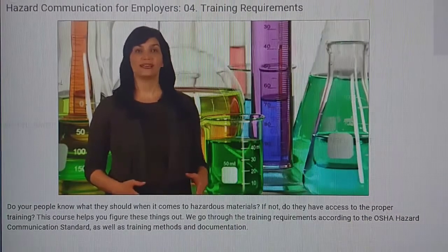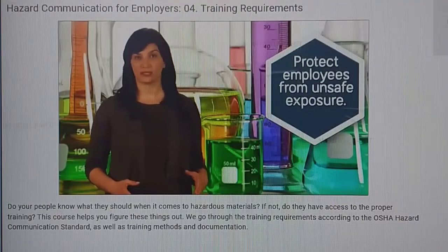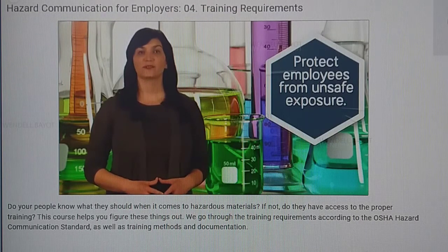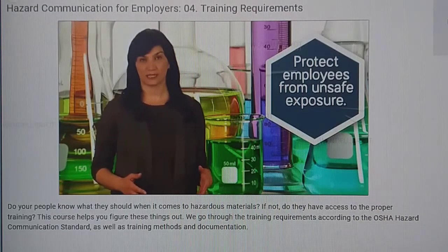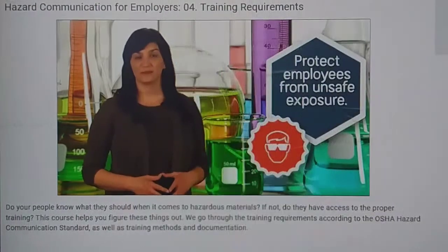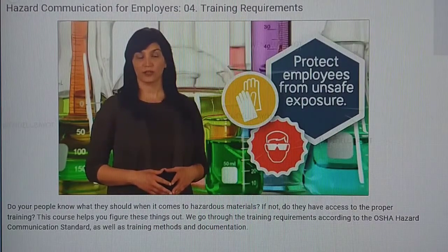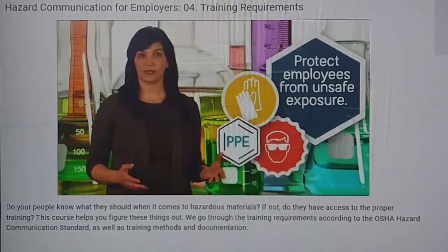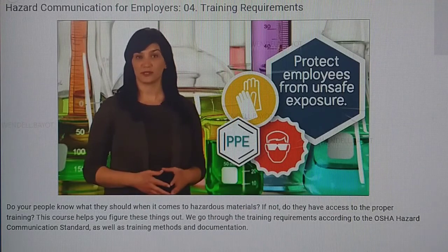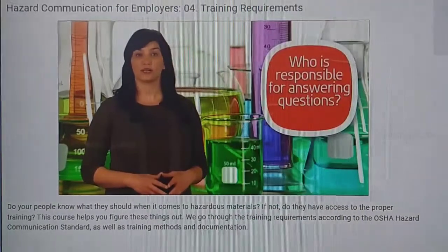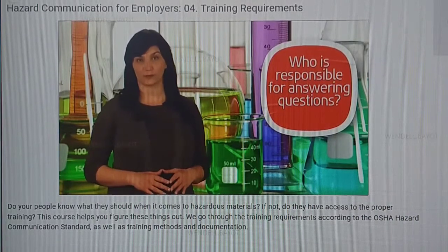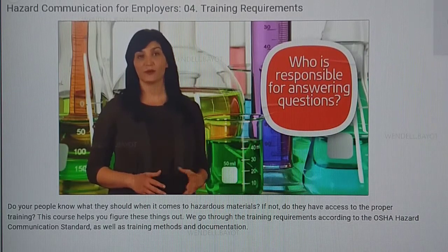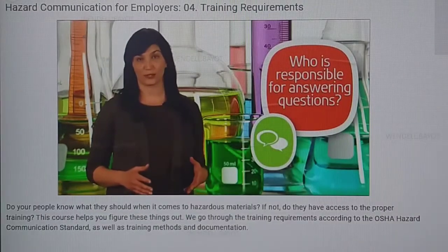Next, your training needs to include how employees can protect themselves from unsafe exposure. This includes learning proper work processes, including emergency procedures, and any required personal protective equipment. For example, if safety goggles and special gloves are required, where does the employee find the PPE, and what should they do with it after using it? This part of your training should also clearly identify who is responsible for the safety and personal protective equipment programs in your building. Your employees should always know who they can go to with questions.